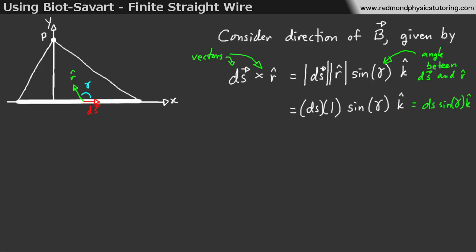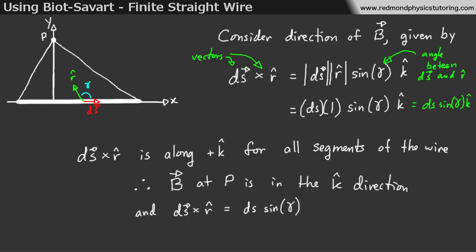And this is true in all of the different places that we can look at. We can look at one position. We can look at the far right. We can look on the left-hand side of the left-hand triangle and even at the bottom of the origin where the angle is 90 degrees. This is just generally true. So, this means that no matter where we look or no matter which dS segment we choose, the magnetic field contributed by that segment is in the k-hat direction at point P.